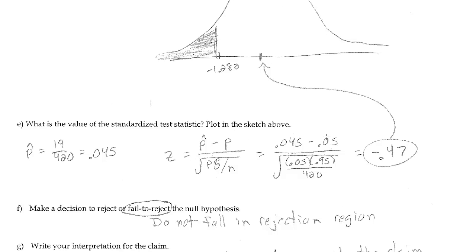So I plug all of that information in here. Here's my pq, these are the population values divided by n. And I crunch that and get negative 0.47.